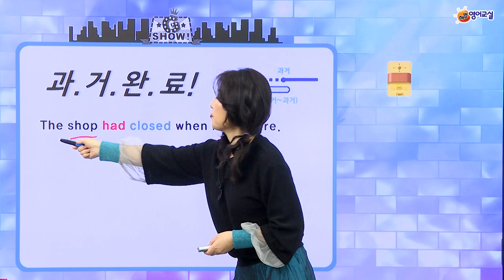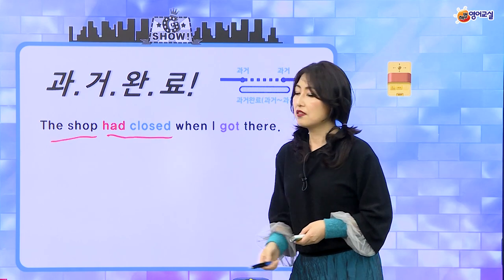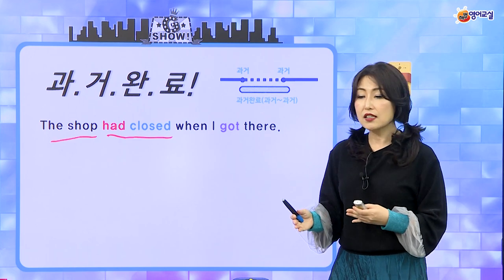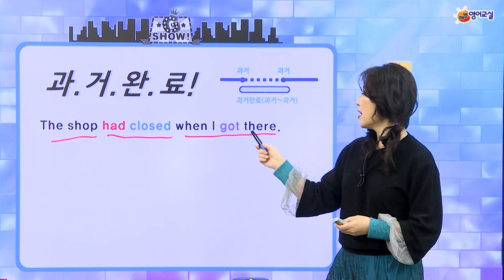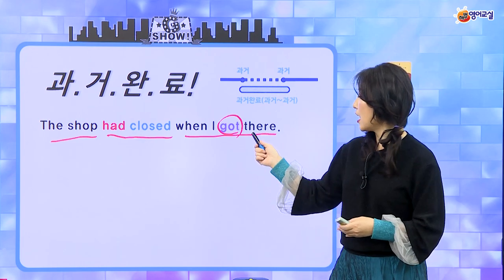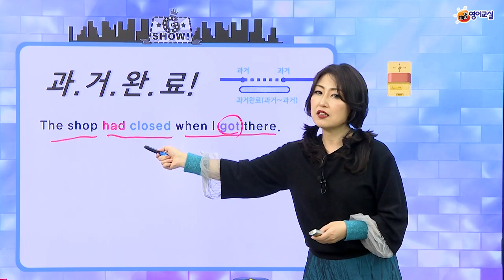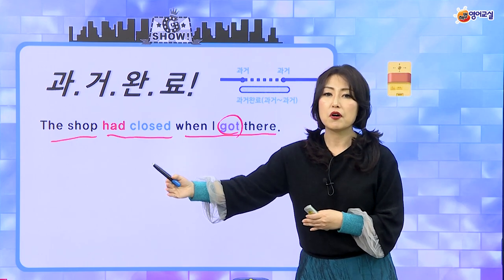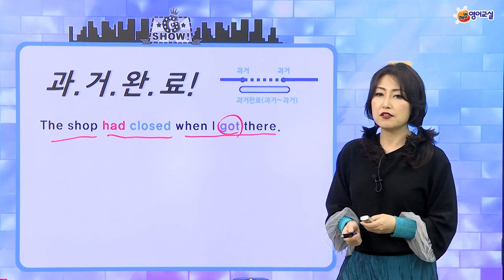예문을 볼게요. 'The shop had closed when I got there.' 그 가게는 had closed — had 과거, 그 다음에 PP가 왔으니까 문을 닫았어요. 내가 거기에 got there, 즉 그 가게에 갔을 때 이미 문을 닫았어. 문을 닫은 거는 내가 거기에 간 거보다 훨씬 더 먼저 일어난 일이잖아요. 그래서 과거 완료를 이렇게 사용하는 거예요.